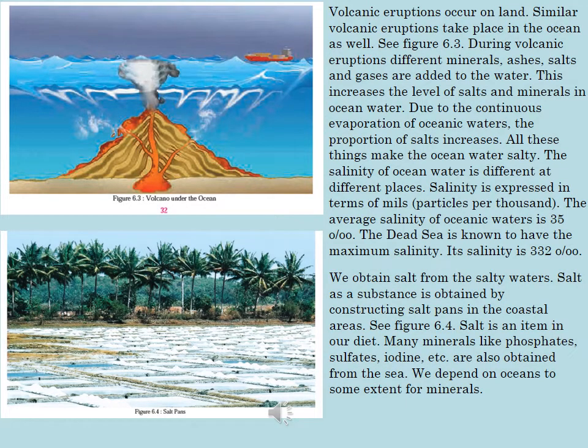Volcanic eruptions occur on land, and similar volcanic eruptions take place in the oceans as well. See Figure 6.3. During volcanic eruptions, different minerals, ashes, salts and gases are added to the water. This increases the level of salts and minerals in ocean water. Due to the continuous evaporation of oceanic waters, the proportion of salts increases.